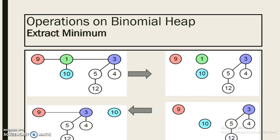Here is our last operation: extract minimum. Extract minimum operation is basically to find and delete the minimum value from this binomial heap.